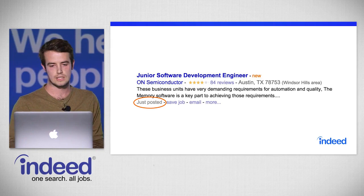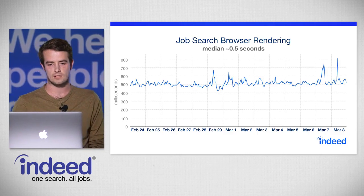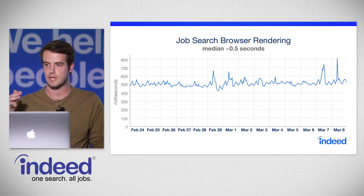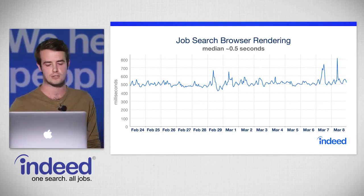A search results page for software engineer in Austin, Texas shows listings with timestamps like 'just posted.' A line graph of job search browser rendering from February 24th to March 8th shows a median render time of about 0.5 seconds. We want that page to render as quickly as possible — today it takes about half a second for that search engine results page to render in the browser.